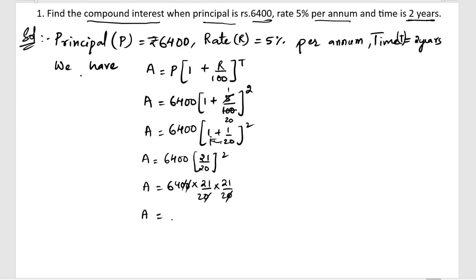Next, we got A equals 64 into 21 into 21 is 441 by 2, 2s are 4, so we got 64 into 441 by 4.